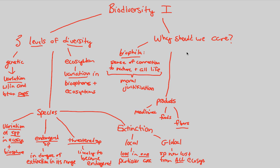In addition, we also have the idea of genetic resources, which are directly related to crop variation. We can manipulate crops in order to vary them, and those crops provide us with food. This genetic resource of manipulating crops is an important idea that we as humans display on planet Earth in regards to biodiversity.